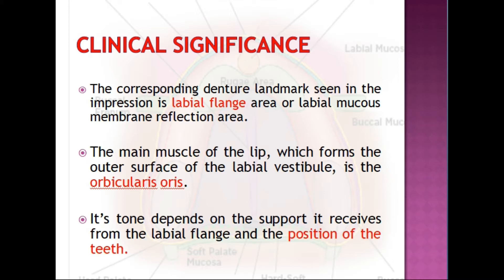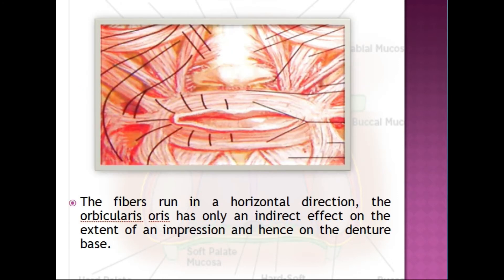The main muscle of the lip forming the outer surface of the labial vestibule is the orbicularis oris. Its tone depends on the support it receives from the labial flange and the position of the teeth. In this area, the functional depth is less because of the particular attachment of muscle fibers — fibers are attached perpendicular to the crest of the alveolar ridge, and therefore when the fibers contract the denture gets dislodged easily.